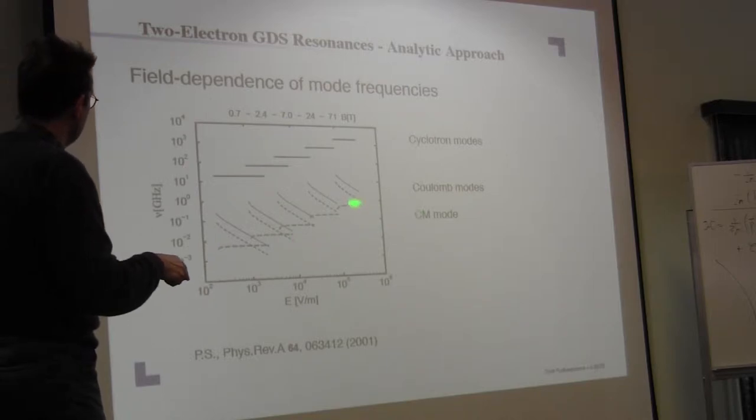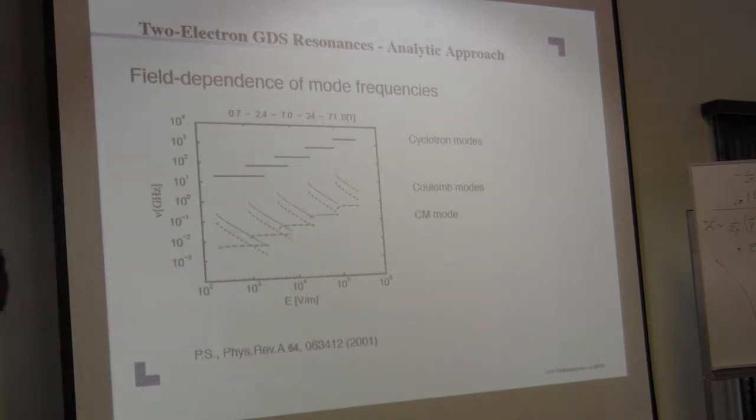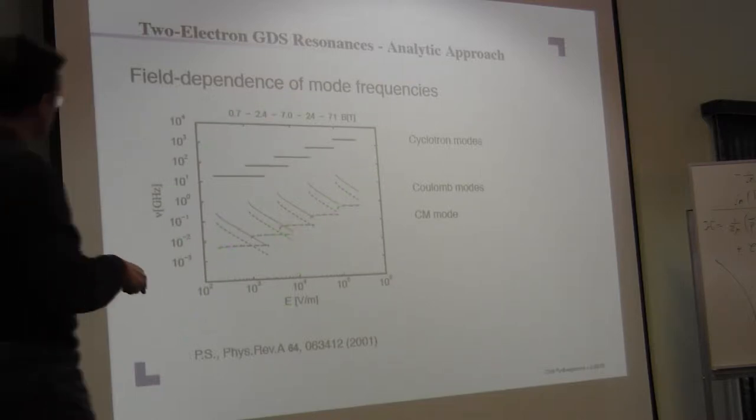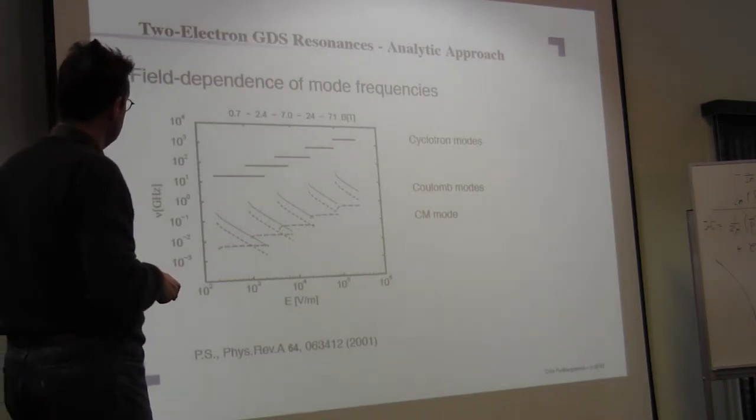You see a set of mass modes which are only at one part dependent at this edge here, and you see Coulomb modes which are very strongly dependent on the electric field. So this is roughly the typical behavior which occurs in these resonances.